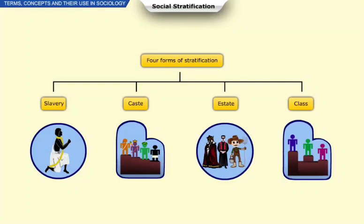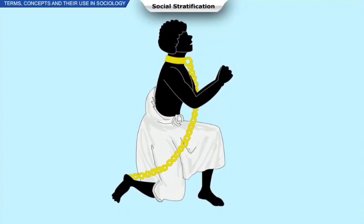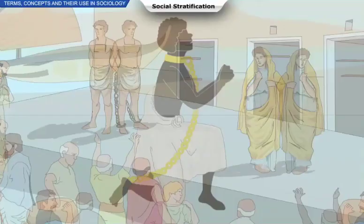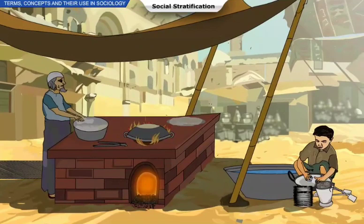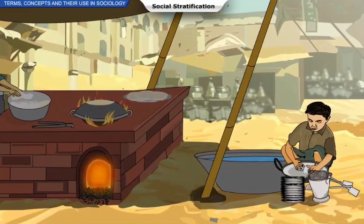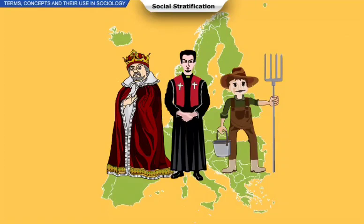Slavery constituted an extreme form of discrimination where poor people were bought and sold by the rich. This system has officially been abolished, though it exists in a different form, namely child labour. The estate form of classification in the feudal society of Europe is another instance of social stratification.